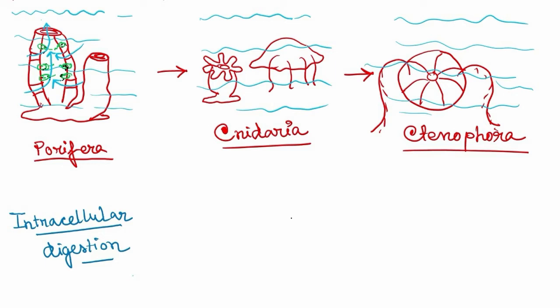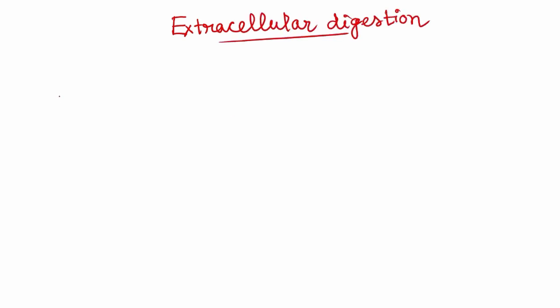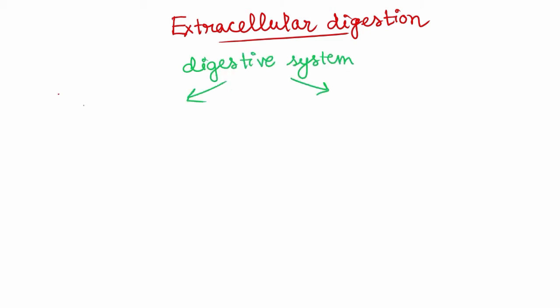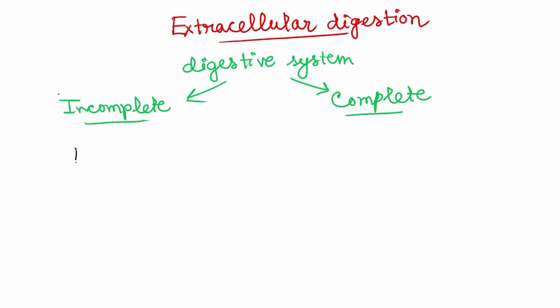This type of digestion found in porifera is intracellular digestion. After porifera, in the other phylums extracellular digestion can be seen. The digestive system for extracellular digestion can be of two types: one is incomplete and the other is the complete digestive system.